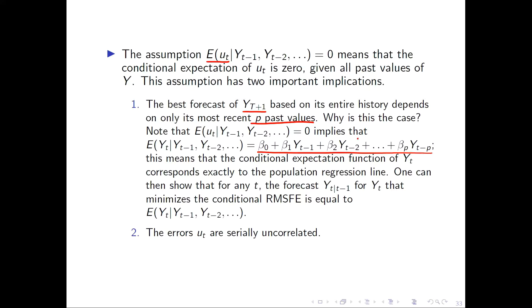So, this p lags autoregressive model corresponds to the population regression line. So, this means that what minimizes the root mean squared forecast error is the lags included in the model T minus p here.